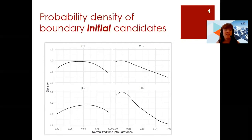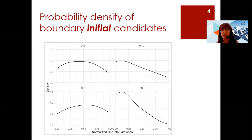On the left, DTL and TLS have higher relative likelihoods to occur halfway through peritones, while on the right, MTL and TTL have higher relative likelihoods towards the beginning of peritones. TTL in particular seems to be more likely to occur exclusively initially.